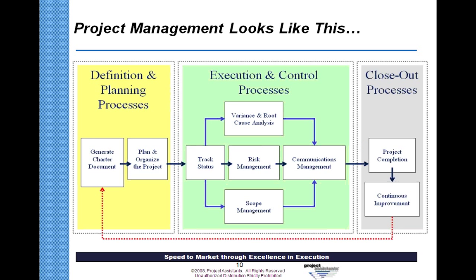The next area to discuss briefly is the project management process. This is a generic view we can see drawn in many ways, but ultimately there are three major groupings: a definition and planning process, execution-level processes around tracking status, looking at variances and root causes against the initial plan, managing risk, communicating about project status, and doing scope management. There are connection points between here and the portfolio level, where we report back from active in-flight projects. Then we see the closeout.